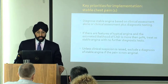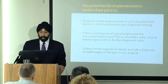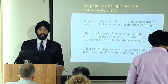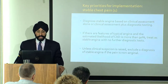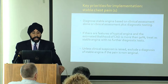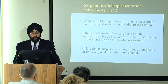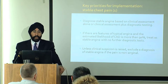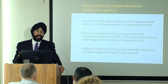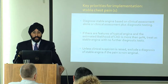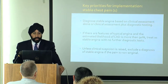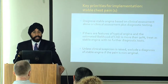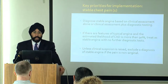NICE basically suggests that we need to diagnose stable angina based on clinical assessment in combination with diagnostic tests. With features of typical angina, we must estimate the likelihood of coronary artery disease. If it's more than 90%, we should treat without delaying for any further tests, and we should treat for stable angina and coronary artery disease. Unless a clinical suspicion is raised, we should exclude a diagnosis of stable angina if the symptoms are not typical — it's non-angina.